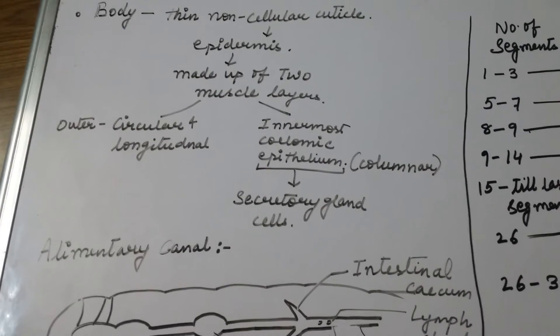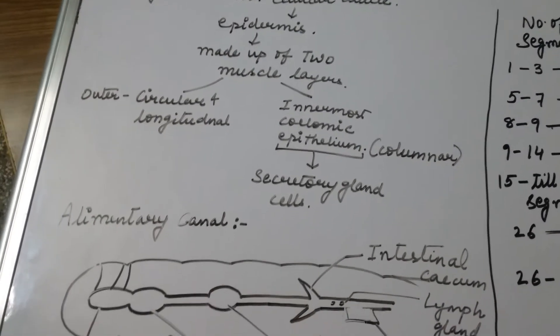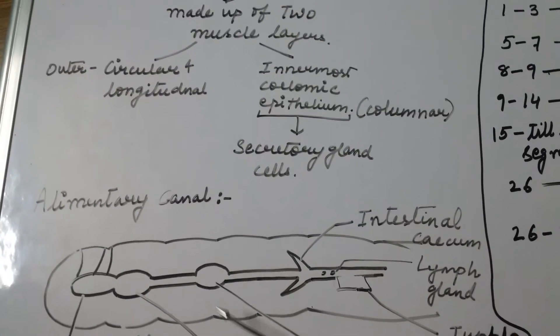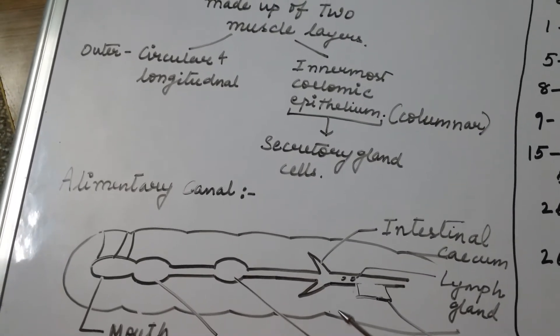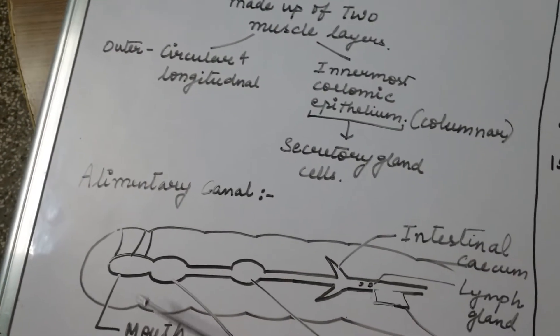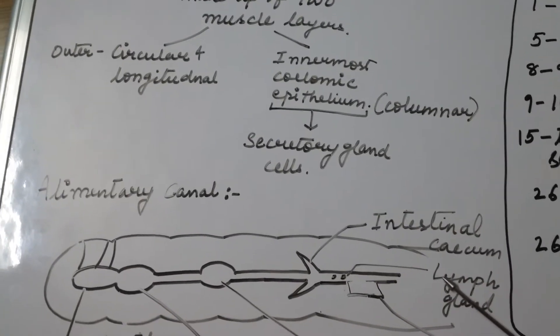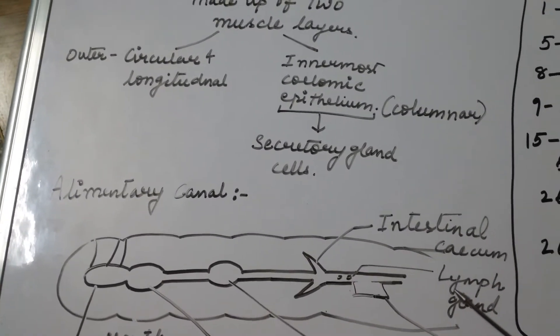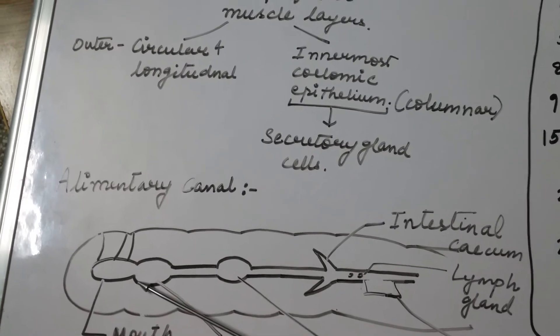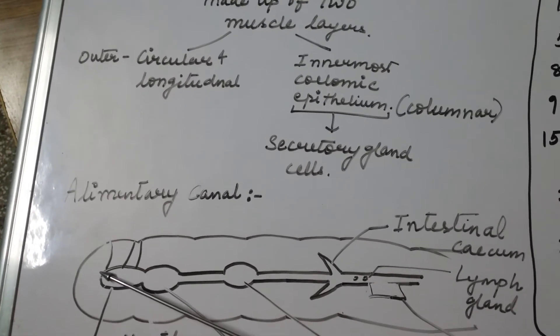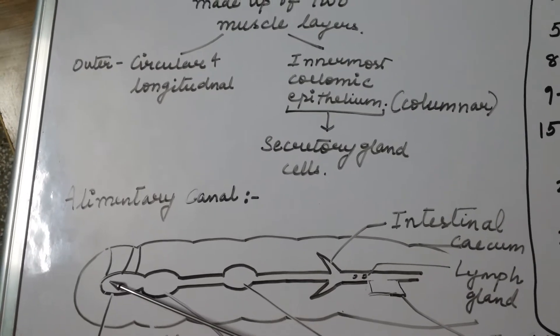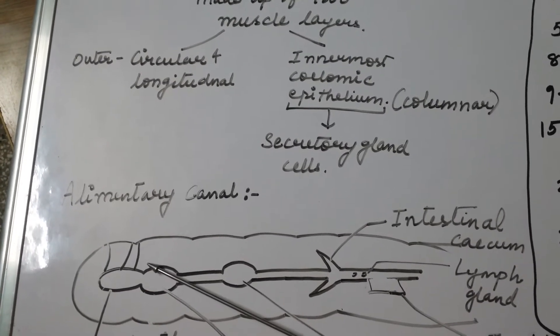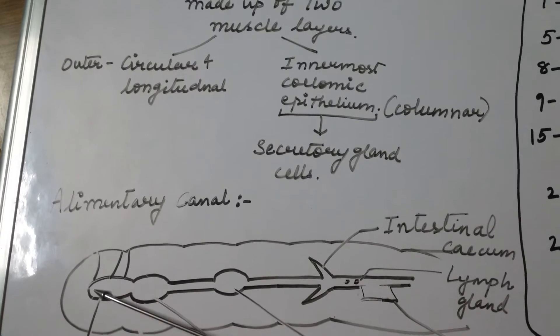The alimentary canal of earthworm is straight tube-like structure that runs from the first segment till the last segment of the body. The terminal position forms the mouth and it opens into the buccal cavity and comprises of first three segments.